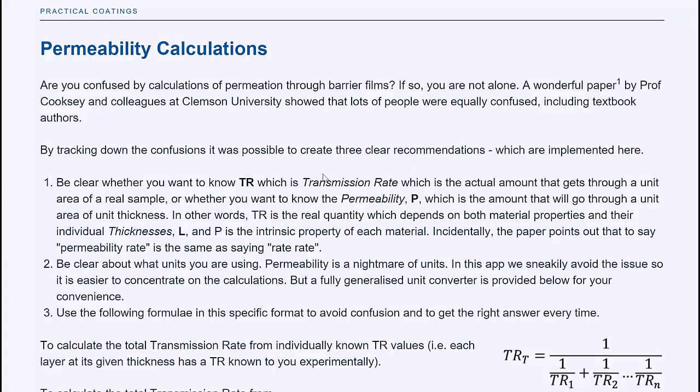The first confusion is between TR, which is transmission rate, which is the amount which actually comes through a barrier, and P, the permeability, which is the scientific measure for a unit thickness of a material or a barrier. And if you don't know whether you're dealing with TR or P, life is very confusing.